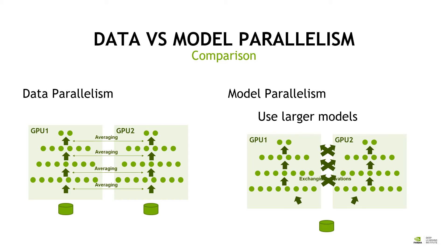With model parallelism, you still have the same dataset. You propagate the dataset from the top layer to the bottom layer, and you have to exchange the activation function when you back-propagate.